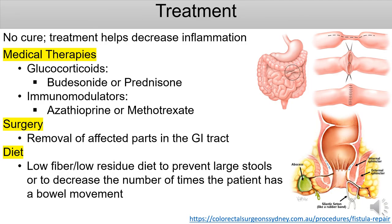There is no cure for Crohn's disease, but treatment can help decrease inflammation. Medical therapies such as glucocorticoids or immunomodulators can be used to decrease the immune system response, relieving symptoms of fever or pain. Surgery is usually done when medications don't work — if there's too much bleeding from a fissure, surgery will be necessary. The image on the top right shows a horizontal cut of the stricture, where the doctor stitches the ends together to relieve obstruction. The image on the bottom right shows surgery done for a fistula, where a silicon seton is placed in the fistula for about six weeks to drain out any pus. As for diet, a low-fiber, low-residue diet is used to prevent large stools or decrease the number of bowel movements. Fiber increases gut motility and if Crohn's patients have a stricture, it can be very painful, so they can eat fruits or vegetables but need to avoid the skin.